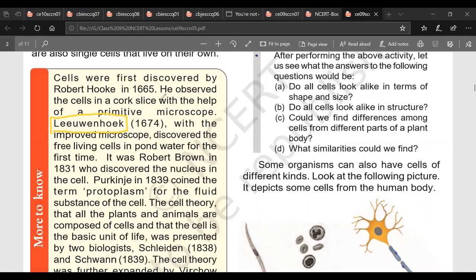In 1674, he observed first living cell. Robert Hooke observed first dead cells. He observed first living cell in pond water for the first time. The third is Robert Brown. In 1831, see the difference of time. 1674 till 1831, more than 100 years. Robert Brown discovered nucleus.